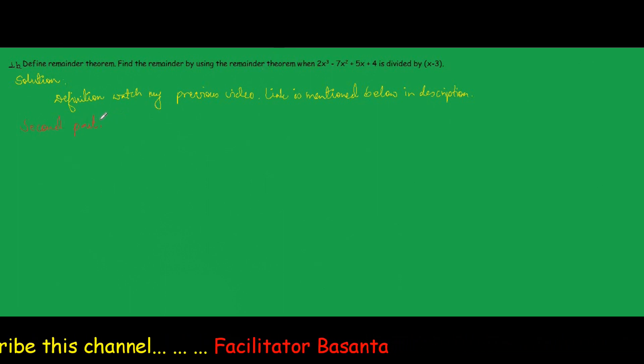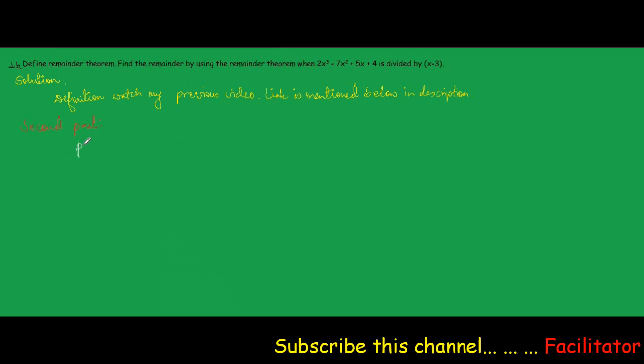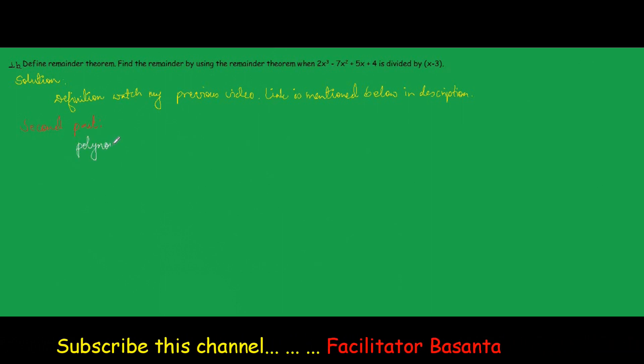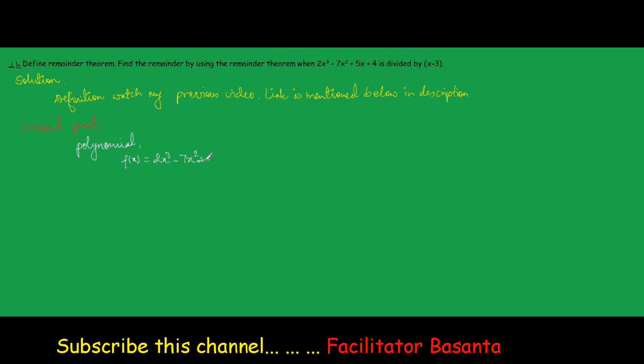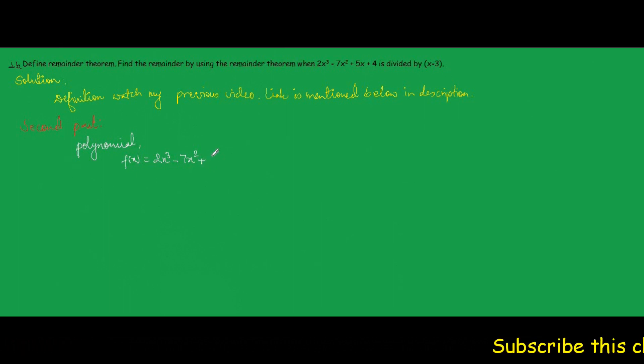In the second part, find the remainder by using remainder theorem. The polynomial, let it be denoted by f(x), is equal to 2x³ - 7x² + 5x + 4.